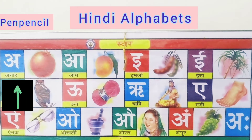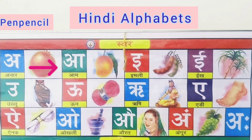A say anar — pomegranate. A say anar — pomegranate. Aa say aam — mango. Aa say aam — mango.